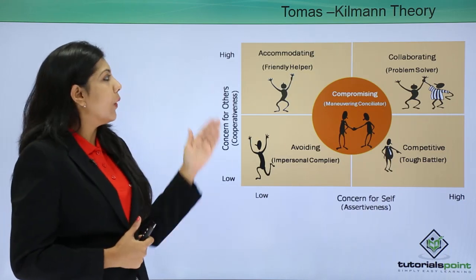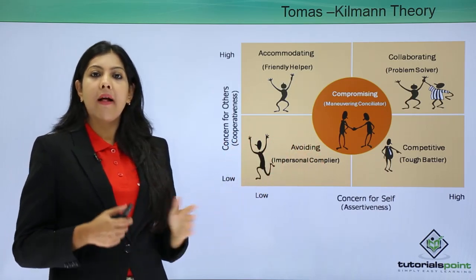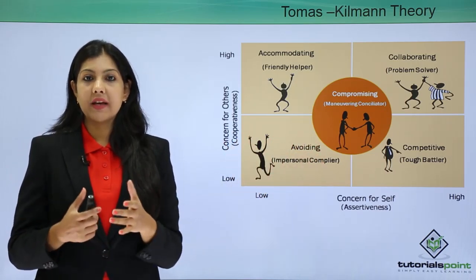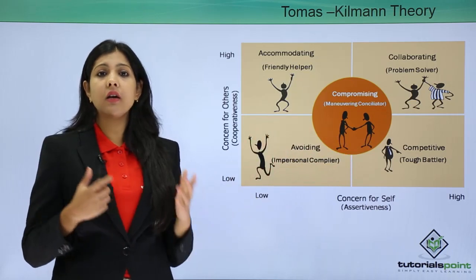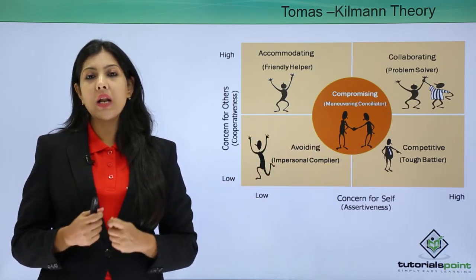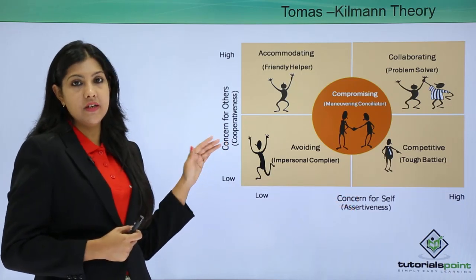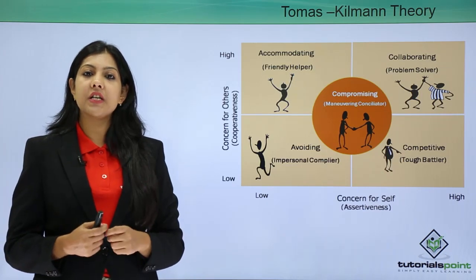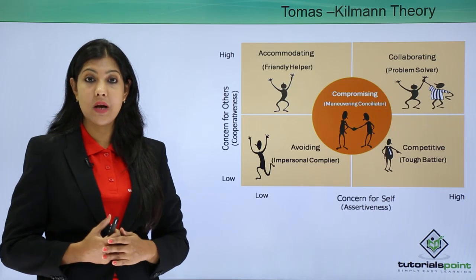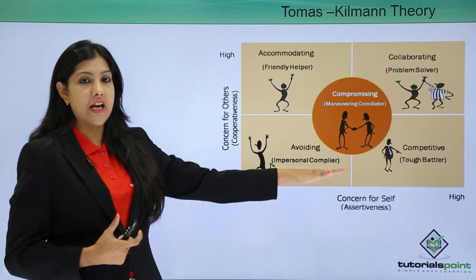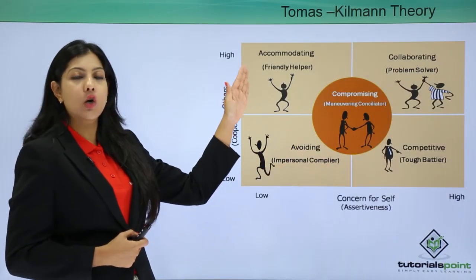There are four key behaviors in conflict situations. A competitive person is high on assertiveness but low on cooperativeness — they want others to lose so they can win, which is not healthy behavior. On the exact opposite is accommodating, which is low on assertiveness but high on cooperativeness — you let go of your own needs to make somebody else happy.